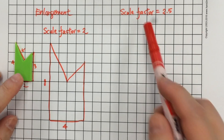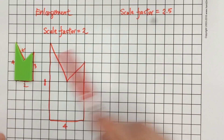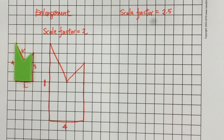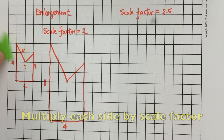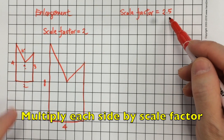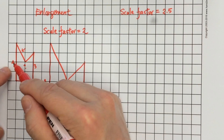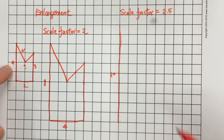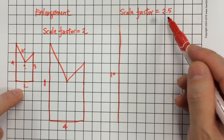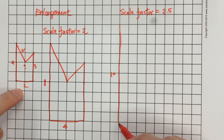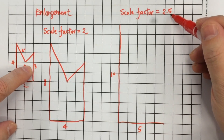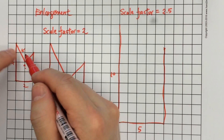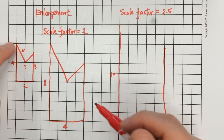Suppose we continue to work on this figure with a scale factor of 2.5 — we enlarge this figure. We multiply each side by the factor 2.5: 4 times 2.5 gives 10 units, 2 times 2.5 gives 5 units, and 3 times 2.5 gives 7.5 units.